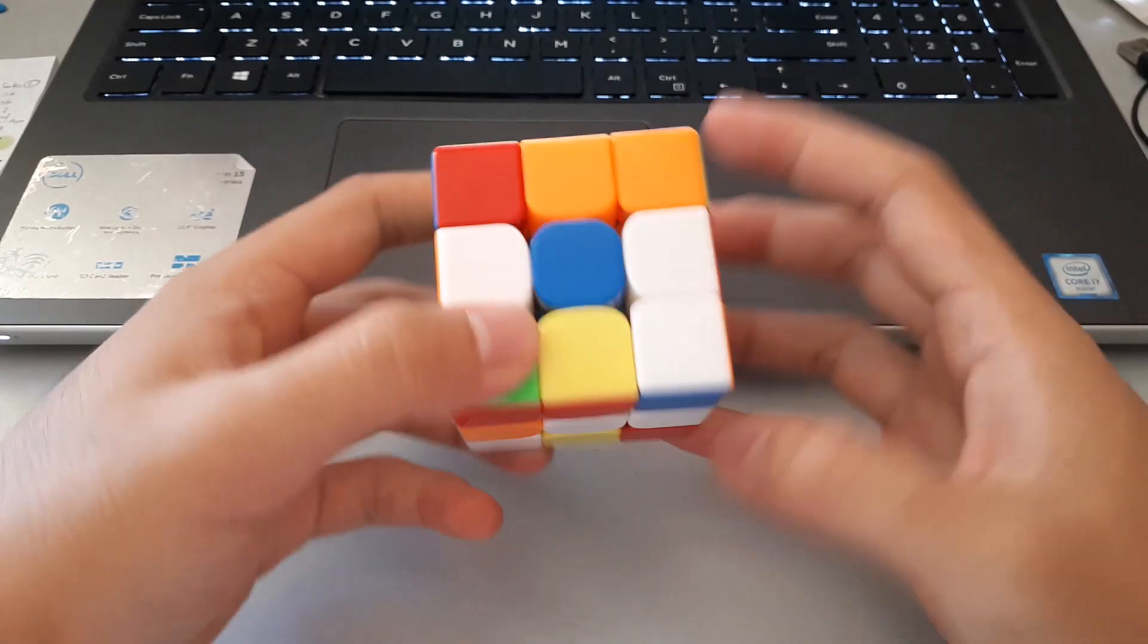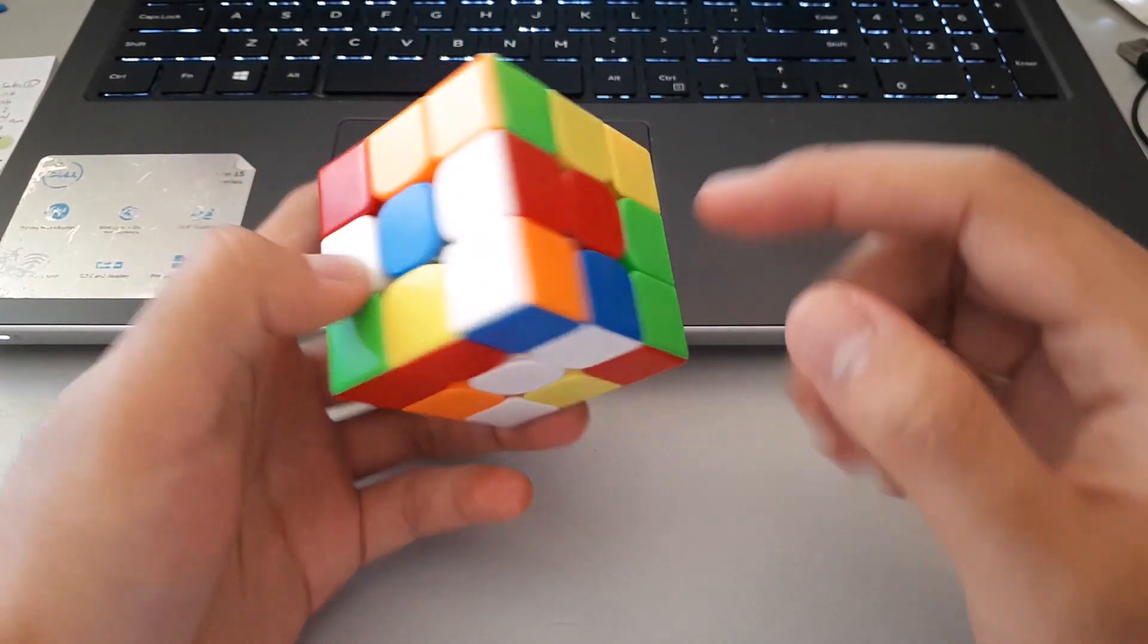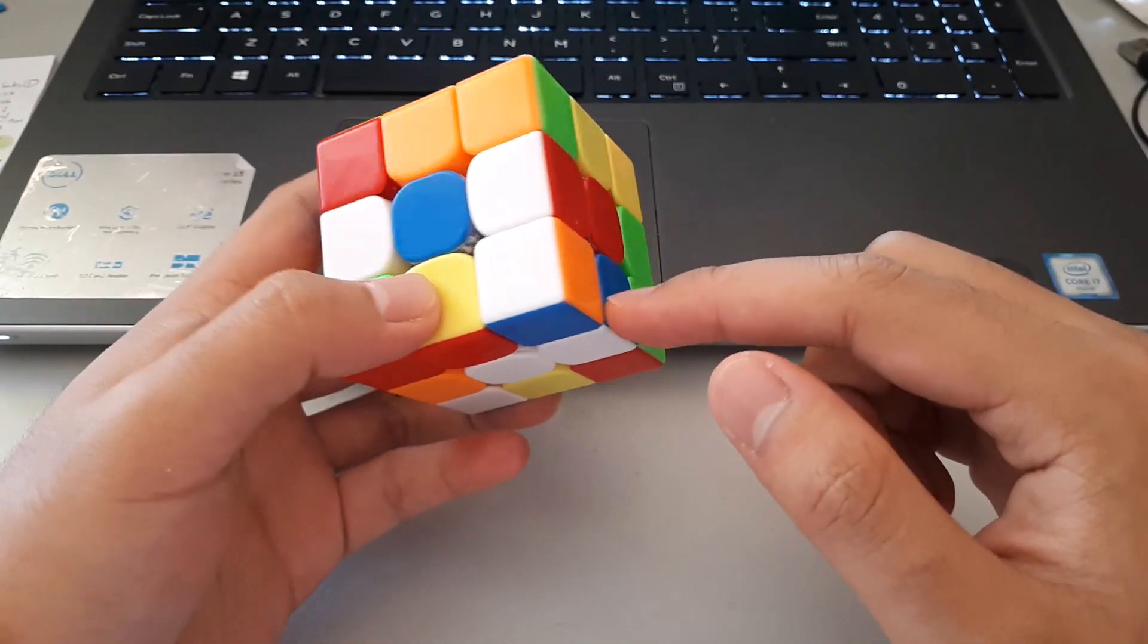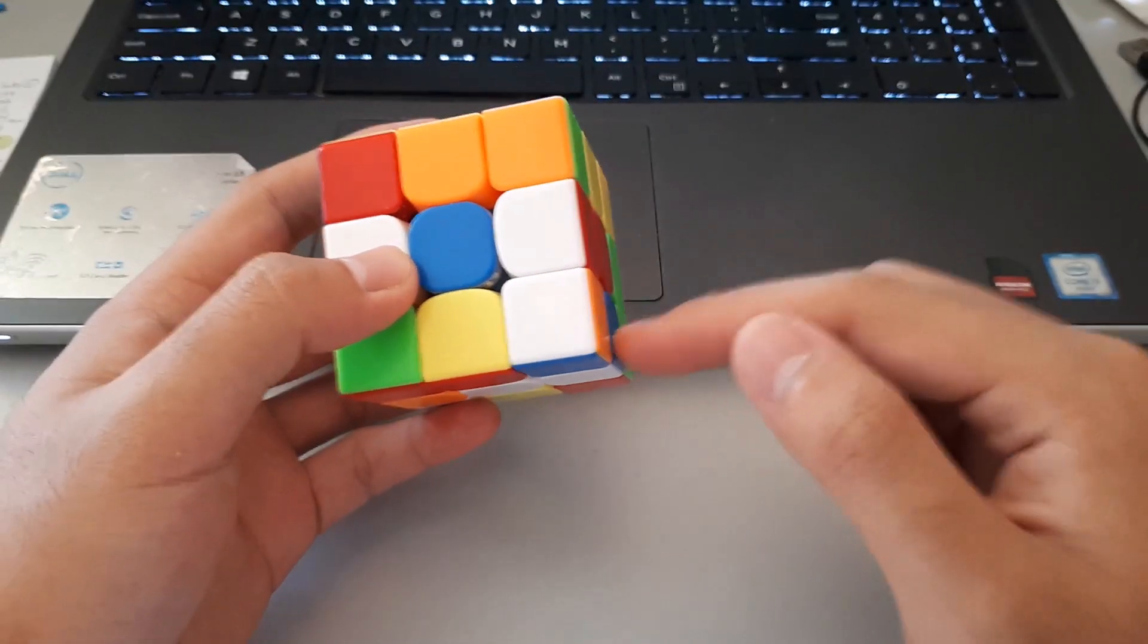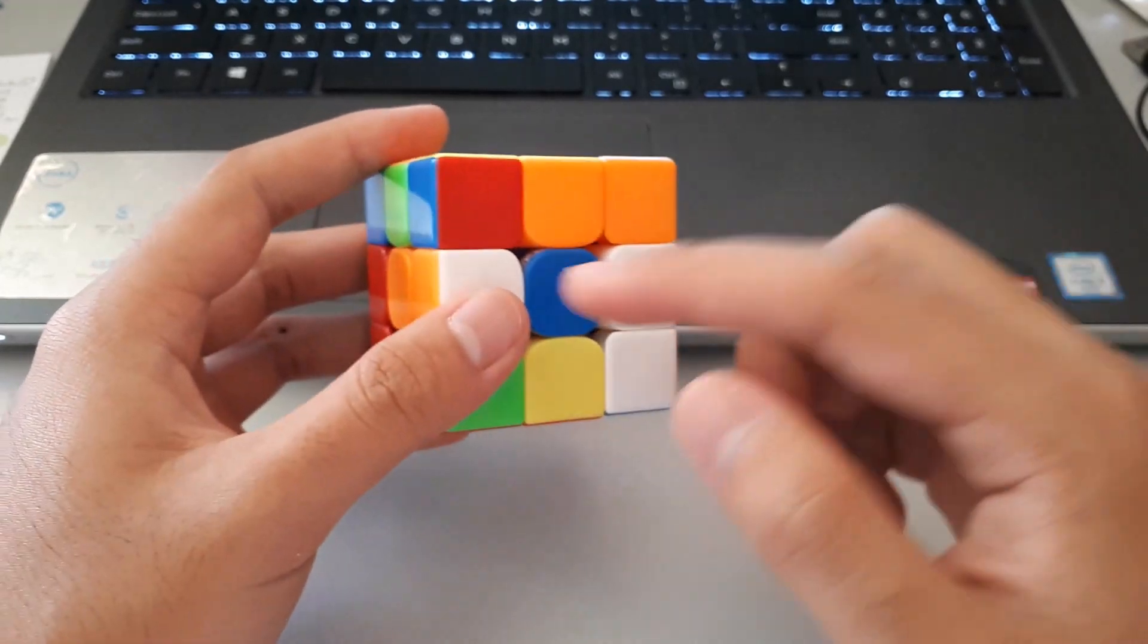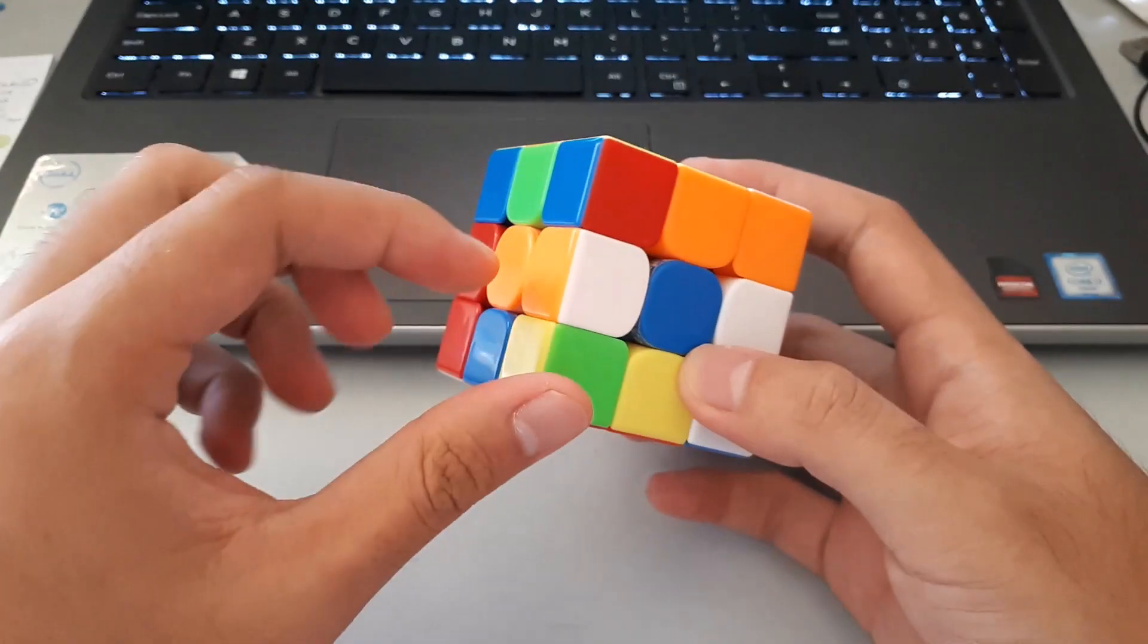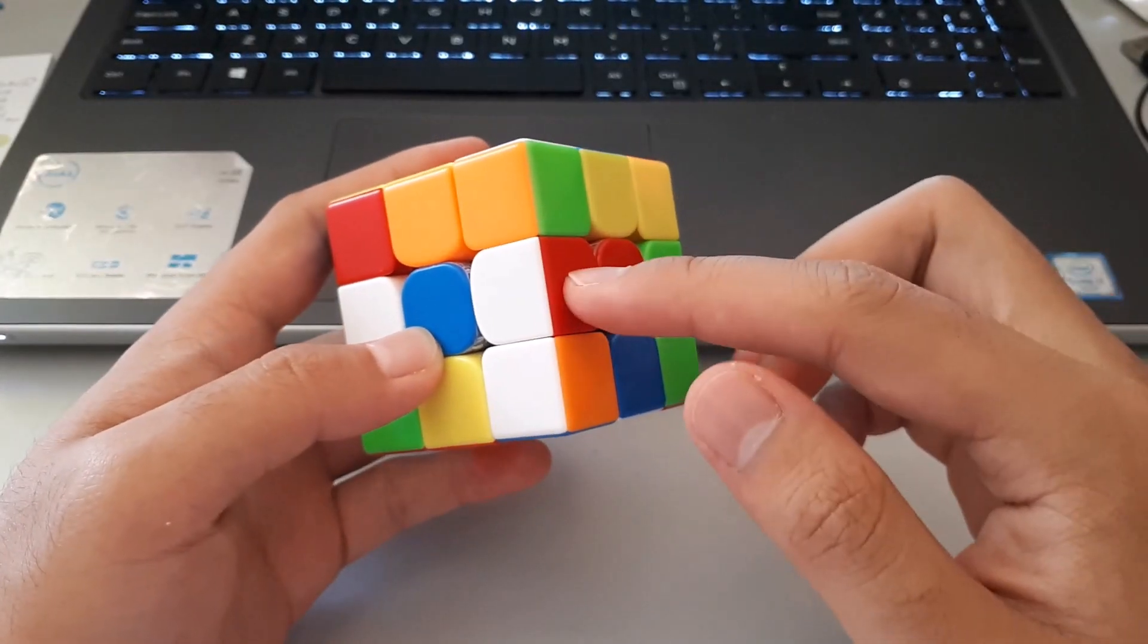So for the first scramble, I see the cross pieces - white cross pieces here, here and here. We can see that blue can be set up to match its centre colour, and that red and orange are already attached to their centres.